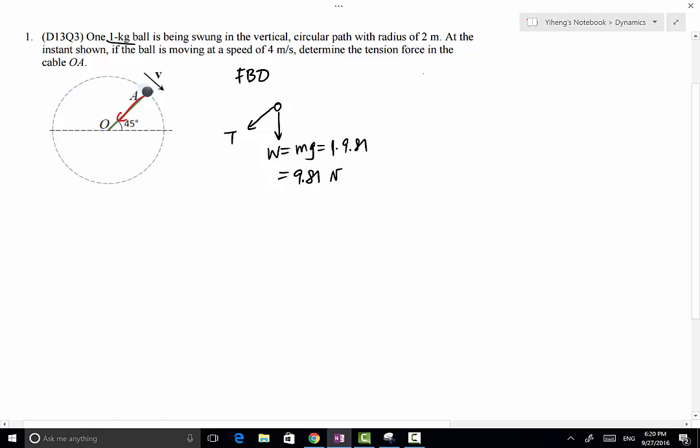And we also need to sketch the kinetic diagram to show its motion. So for that we need to pick coordinate system. Because the path is circular, therefore it is convenient to set up our coordinate system to be the normal and the tangential coordinate system. Therefore we know that the tangential direction is always along a tangent to the path along the direction of velocity, and the normal direction is always perpendicular to the tangential direction, and points to the center of curvature.